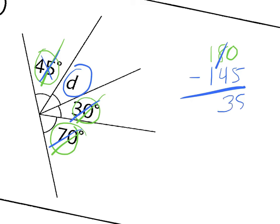Let's check it. 35 plus 30 plus 70 plus 45 should equal 180. 70 and 30 is 100, 145, 175 plus that is 180.